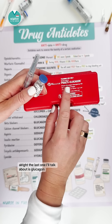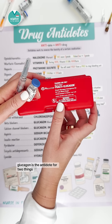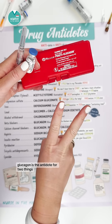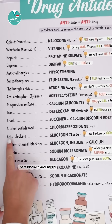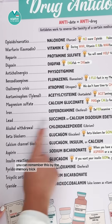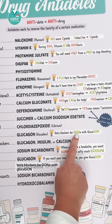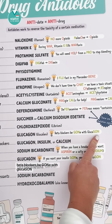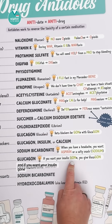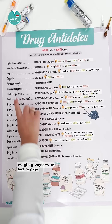Alright, the last one we'll talk about is glucagon. Glucagon is the antidote for two things: beta blockers and insulin. You can remember this by the memory trick: 'beta blockers be gone with glucagon.' And if you want your insulin gone, you give glucagon.